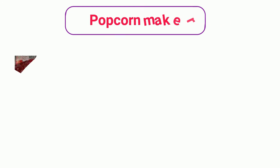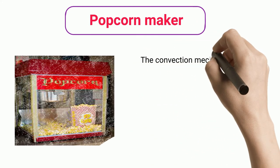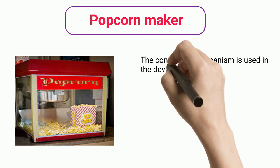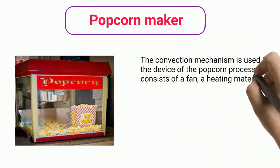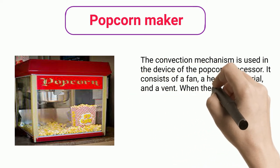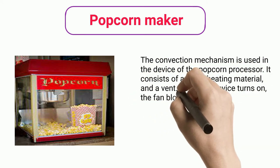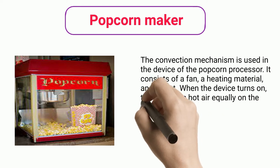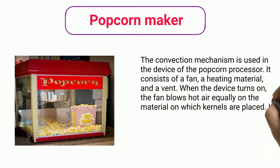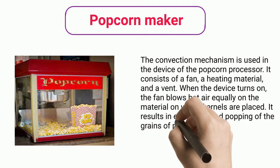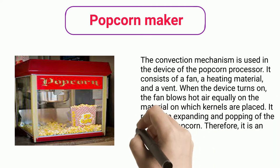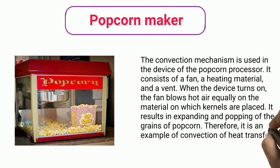Popcorn Maker: The convection mechanism is used in the device of the popcorn processor. It consists of a fan, a heating material, and a vent. When the device turns on, the fan blows hot air equally on the material on which kernels are placed. It results in expanding and popping of the grains of popcorn. Therefore, it is an example of convection of heat transfer to process food.